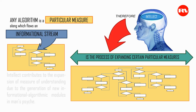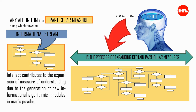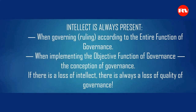The essence is that any algorithm is a certain particular measure through which flows of incoming information run, and due to the expansion of this particular measure, intellect develops. In other words, intellect contributes to the expansion of the measure of understanding, due to the generation of new informational algorithmic modules in man's psyche. And intellect, first of all, is a process of expansion of a certain particular measure.